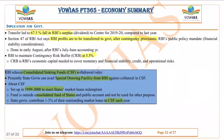The transfer led to a 67.5 percent fall in RBI's surplus dividend payable to the government. RBI generally maintains a 5.5 percent contingency risk buffer. This is mainly to ensure financial stability in the market and to cover operational risks in the banking system.